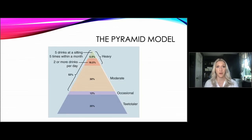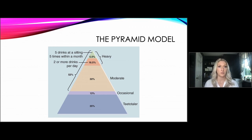Looking at the pyramid model: according to the 2015 National Survey on Drug Use and Health, 86% of people age 18 and older reported that they drank alcohol at some point in their lifetime. 70% reported drinking in the past year, and 56% reported drinking in the past month. The pyramid model illustrates heavy users at the top, then moderate users, then occasional users.